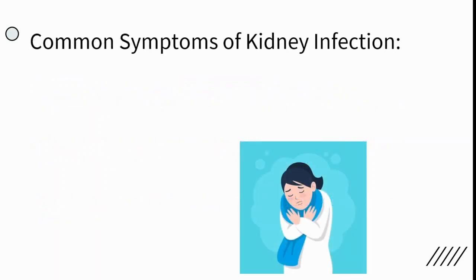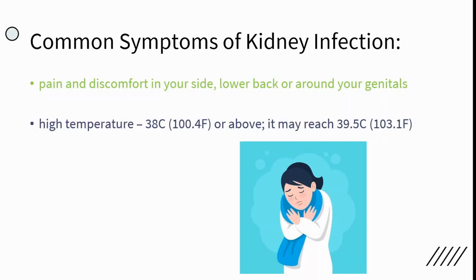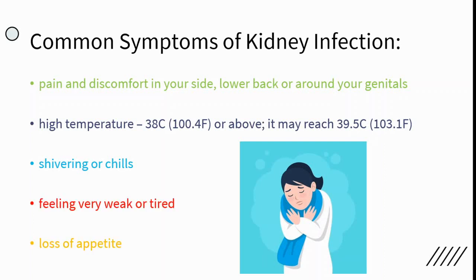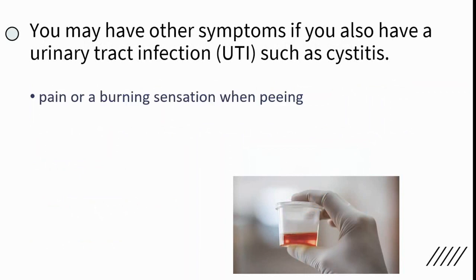The symptoms we generally see are pain and discomfort in your side, lower back, or around your genitals; high temperature; shivering or chills; feeling very weak or tired; and loss of appetite. If you have any other urinary tract infection such as cystitis, you may have other symptoms.